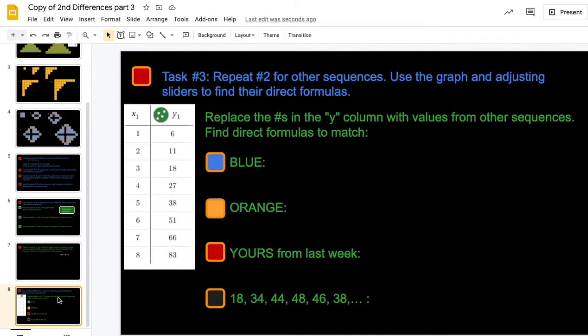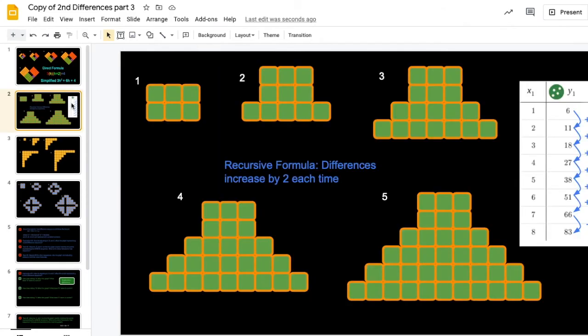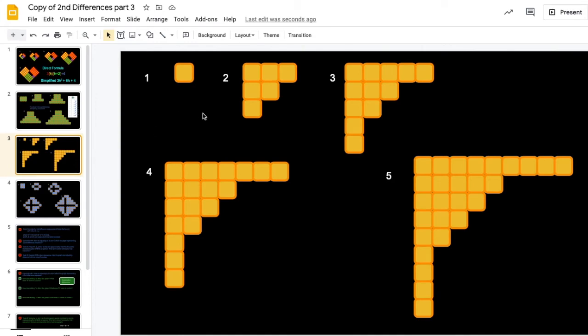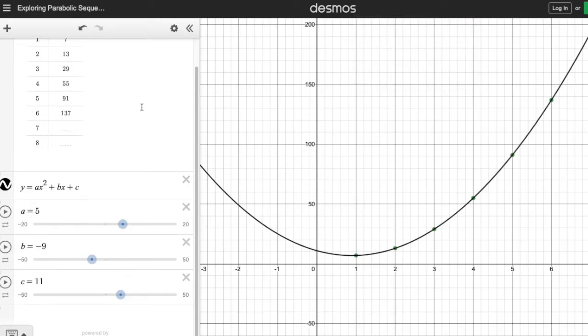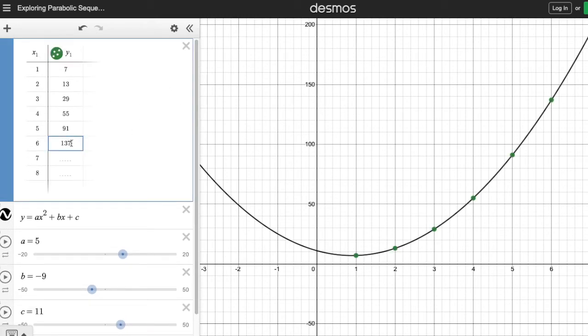Slide 8, you're going to repeat. You're going to repeat the process for different sequences or different sets of numbers. The original set of numbers, 6, 11, 18, 27, that's in the graph for you. This sequence from part 2. So you're going to do the same thing with the orange sequence. For example, 1, 6, 12, and the way you'll do that is come back onto the graph, delete all these numbers in the Y column, and replace them with the orange numbers.